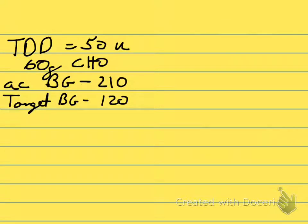Let's look at a real-life example. We have a total daily insulin dose of rapid-acting insulin of 50 units for this individual, and they're about to consume a meal that contains 60 grams of carbohydrate. They check their blood sugar before the meal and find it to be 210, and they know their target blood glucose is 120.